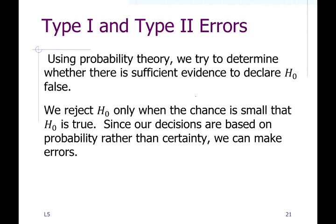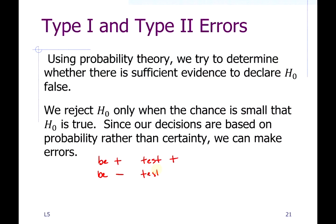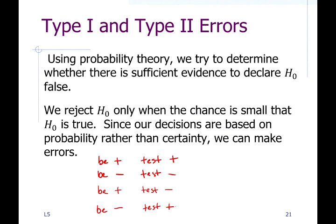Think about going to a doctor to be tested for the flu. Four things could happen: you could be positive and test positive — the test is correct; or negative and test negative — also correct. Or the test could be wrong in two ways: you could be positive but test negative — a false negative; or you could be negative but test positive — a false positive. Type 1 and Type 2 errors are like a false positive and a false negative.